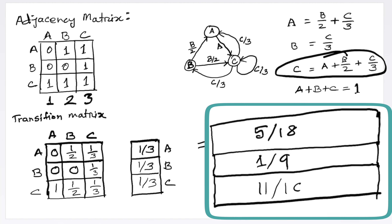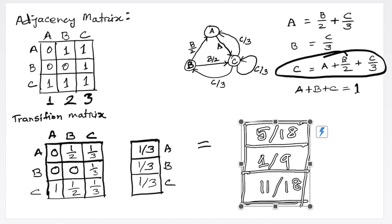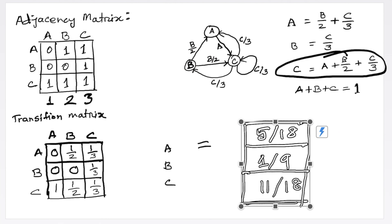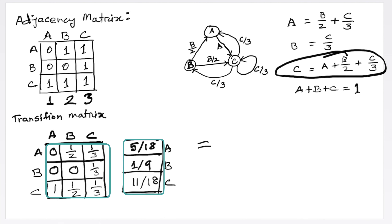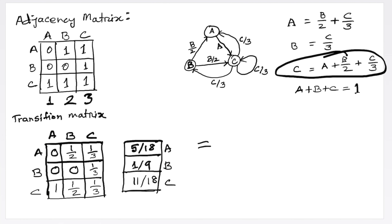Simplifying these calculations, the values become: 5/18 for A, 1/9 for B, and 11/18 for C. We now replace our previous rank vector with this newly generated rank vector.